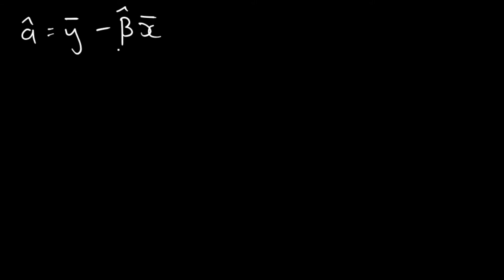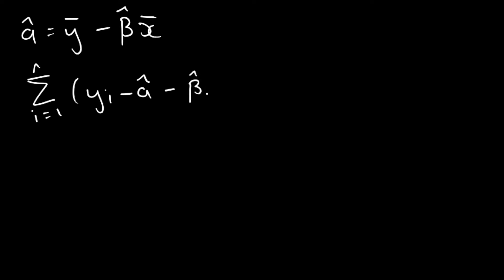If you recall from the previous video, the goal of any OLS model is to minimize the sum of the squared residuals. This is the difference between the true linear regression model that we can't observe and the linear regression model that we estimate — we square that difference and sum it over all observations. The goal of alpha and beta is to provide values that minimize this equation.